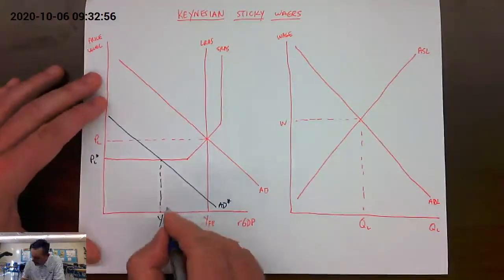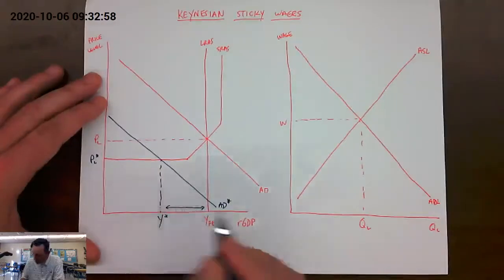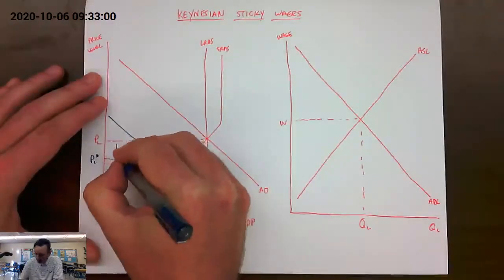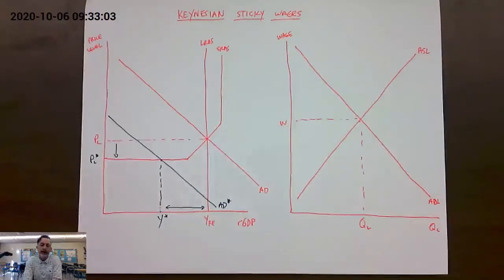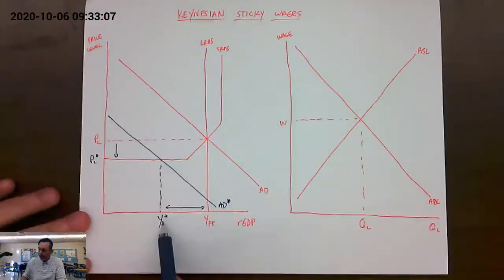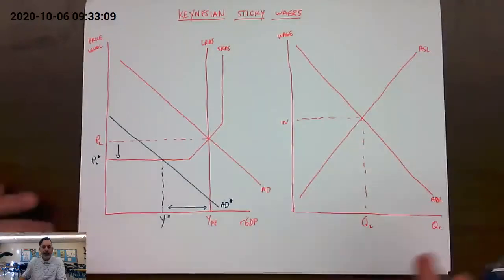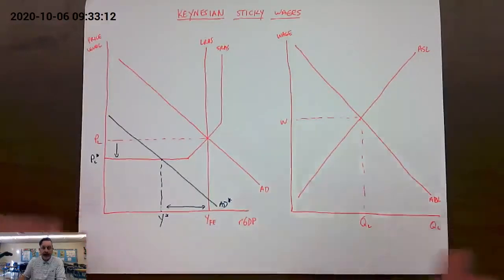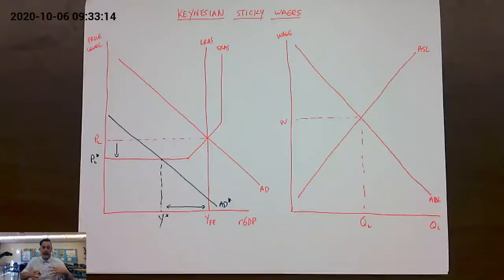So we can clearly see that we have a recessionary gap, and we can clearly see that we have a lowered price level. So what's going to happen here is because we have this recessionary gap, what you're going to see is that with fewer businesses needing to produce output,